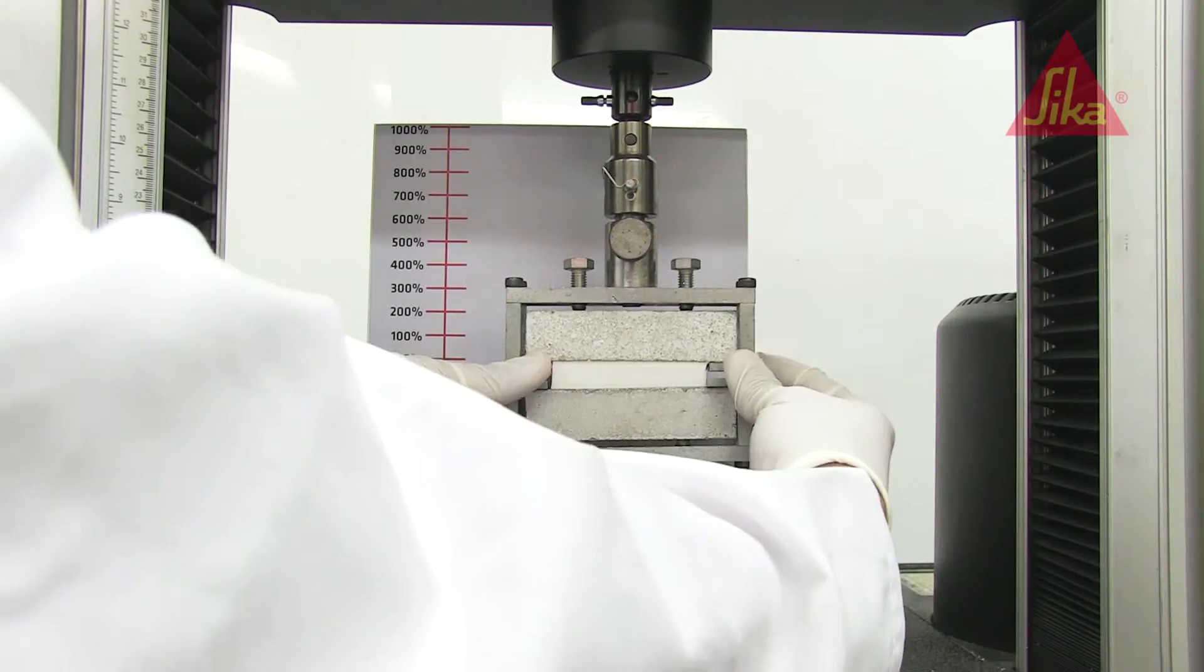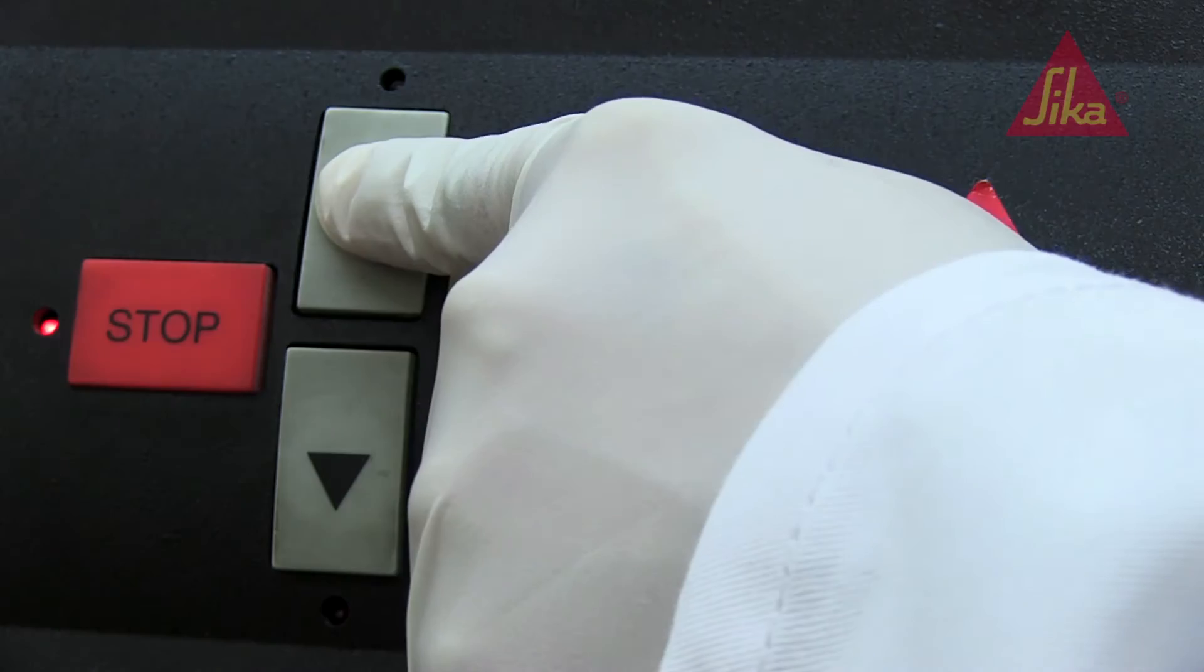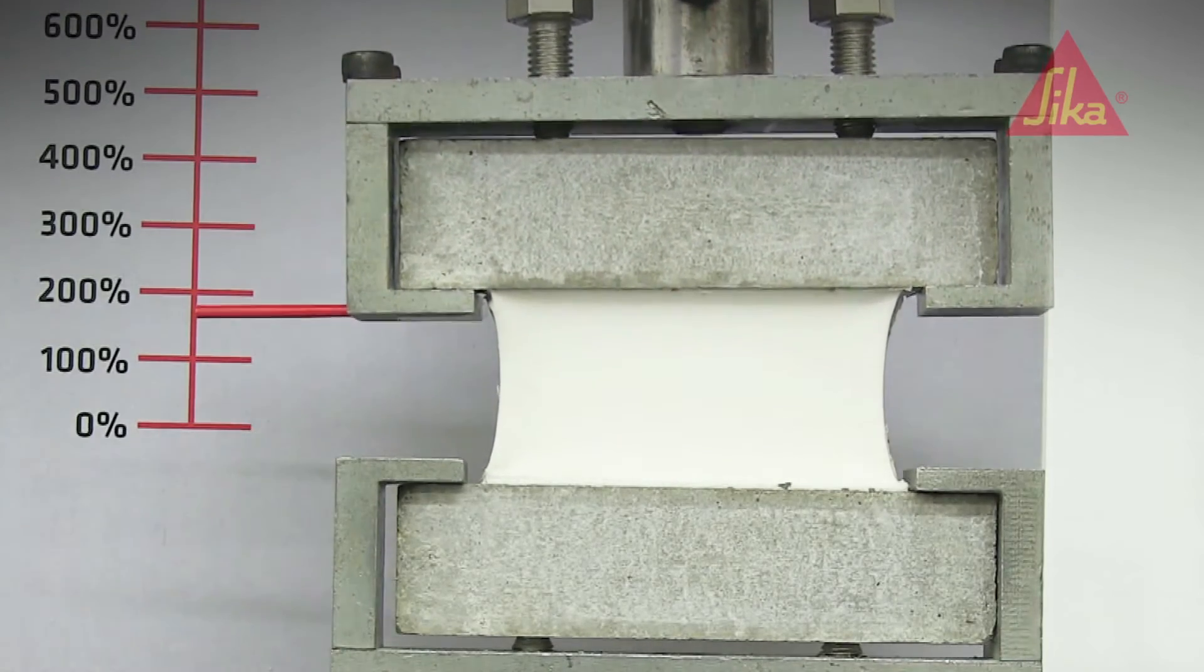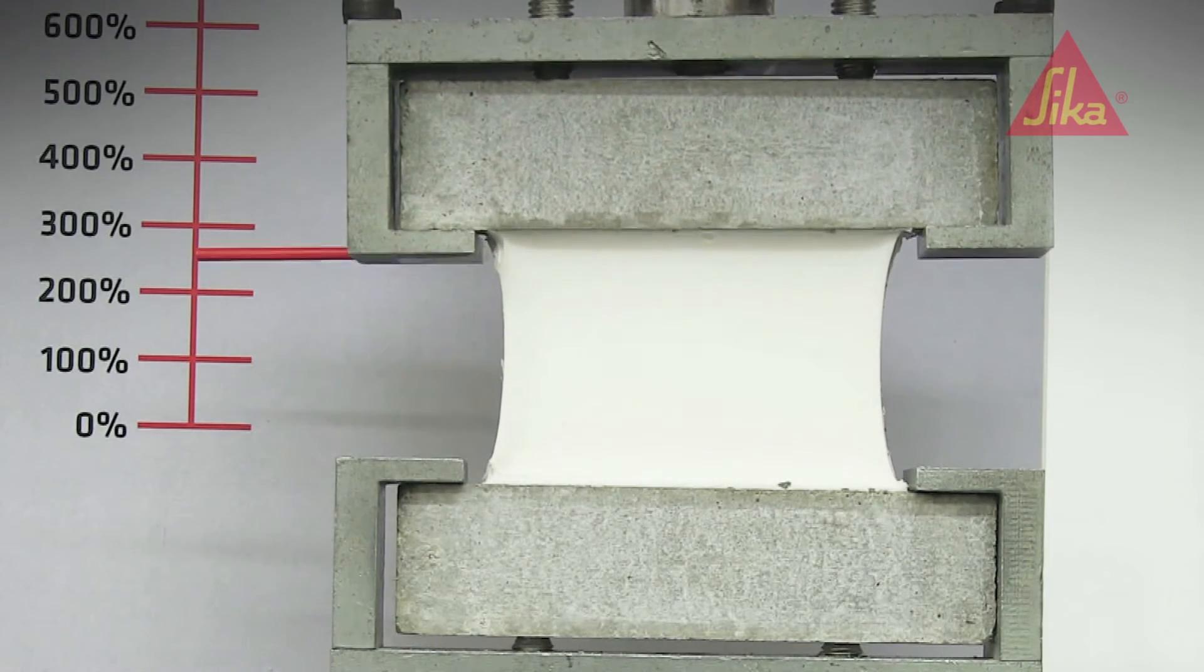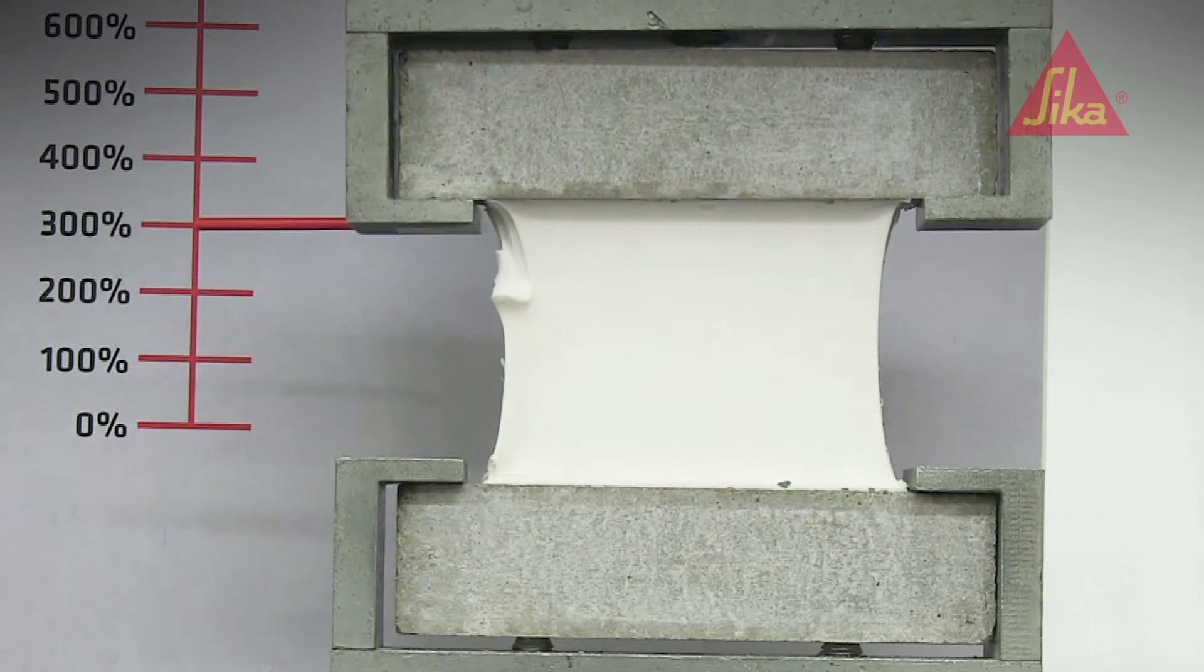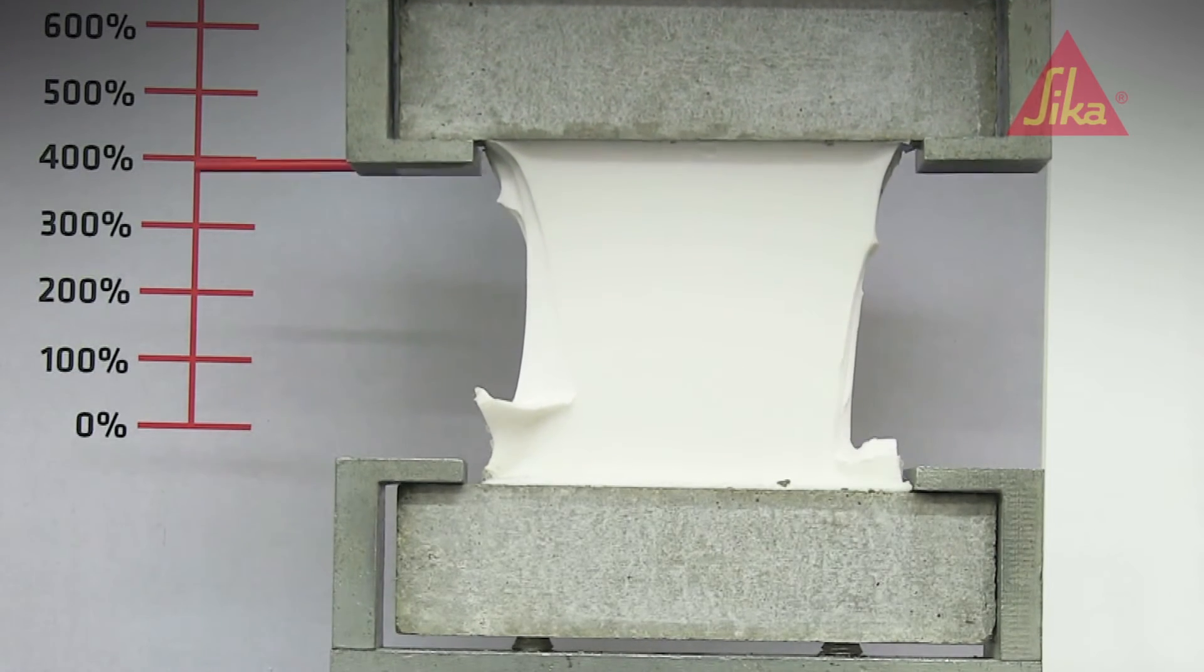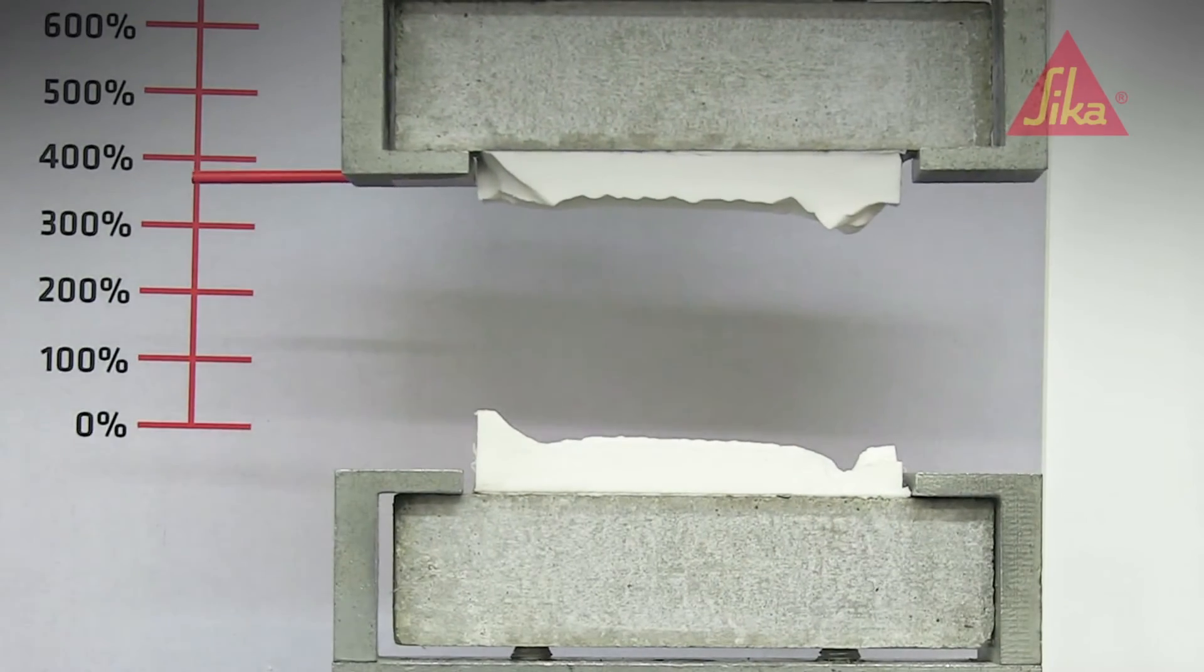First we put the typical silicon into the tension testing machine. As you can see, it performed well. It's a Sika silicon after all. But once it started to tear, it failed quickly, like a zip undoing, a common trait with all silicon sealants.